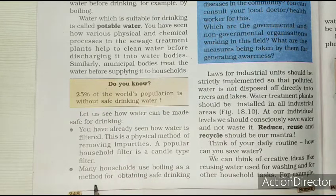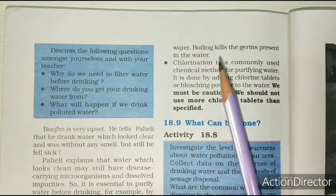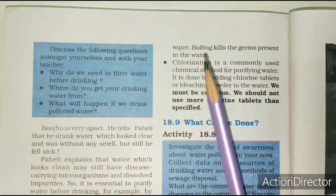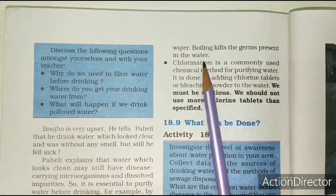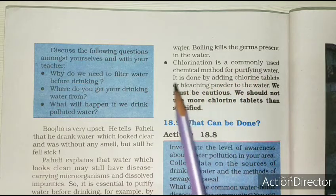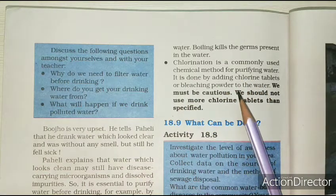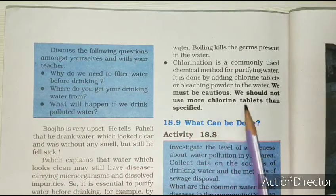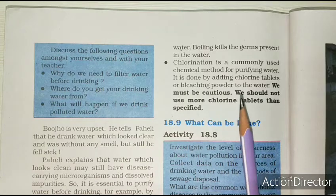Many households use boiling as a method for obtaining safe drinking water. Boiling kills the germs present in the water. Bahut saare log chlorine ko add karte hain - chlorine ek chemical hai jo water purify karne ke liye use hota hai. It is done by adding chlorine tablets and bleaching powder to the water. We must be cautioned - we should not use more chlorine tablets than specified, because chlorine in large amounts is not good for us, but in small amounts it can be used.